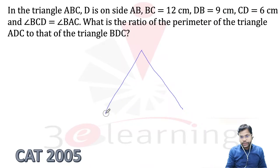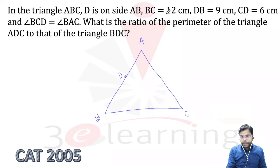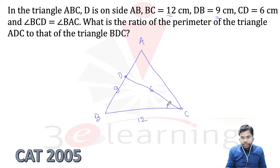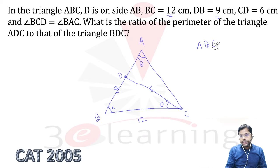We have triangle ABC — A, B, C. D is a point on AB. BC is 12, DB is 9, CD is 6. Angle BCD equals angle BAC. Again a similarity question. Because if you find theta in one triangle, you find theta in the other. The two triangles share angle B, making this a similarity case.